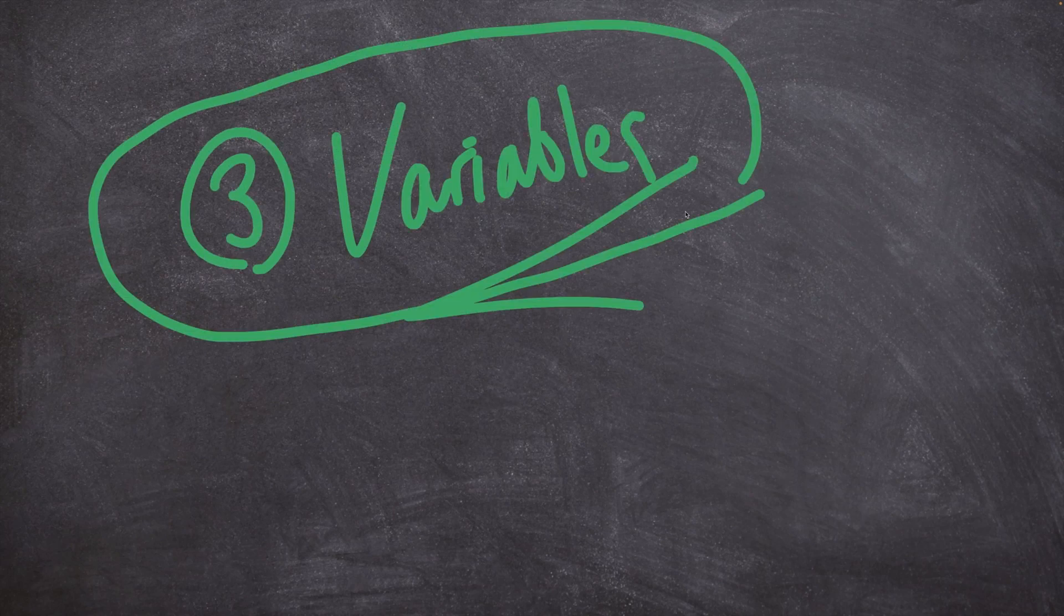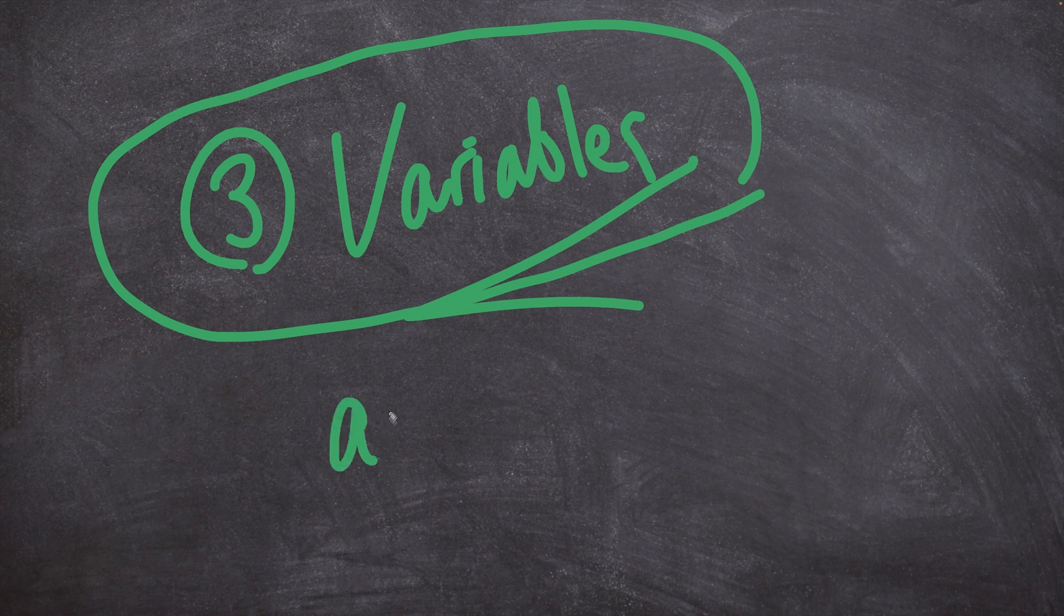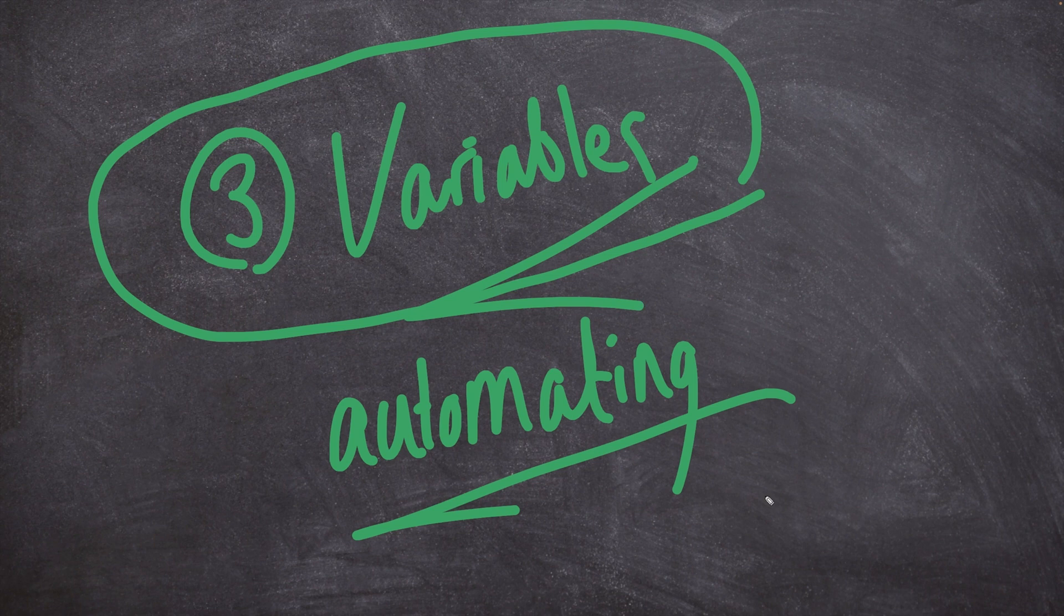The third component is variables. This is a well-known concept in programming. When we're automating things, while a lot of the information might be repetitive and we can push out the same changes to all devices, we understand that some configurations on particular systems need to be unique.